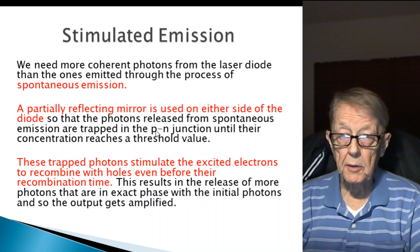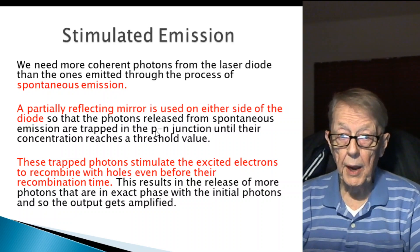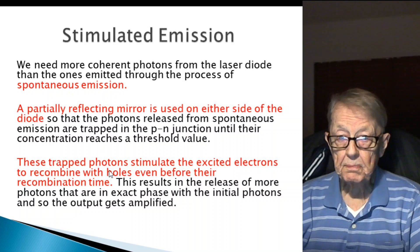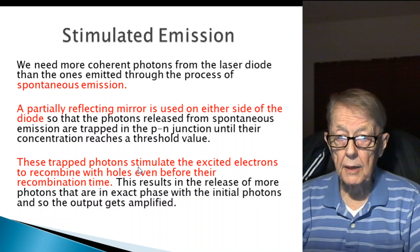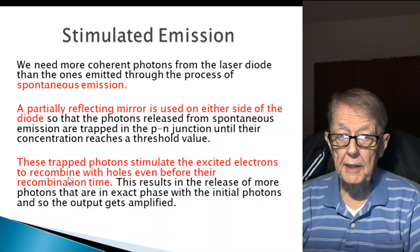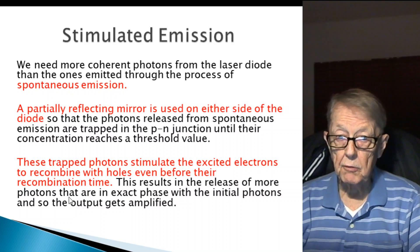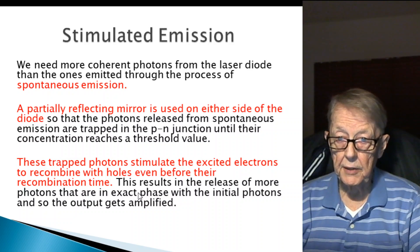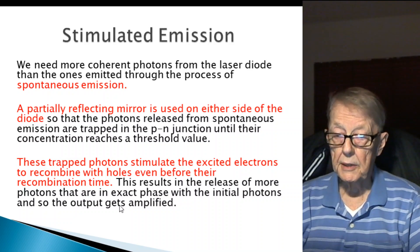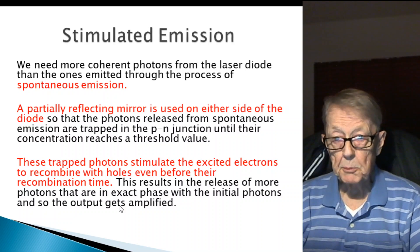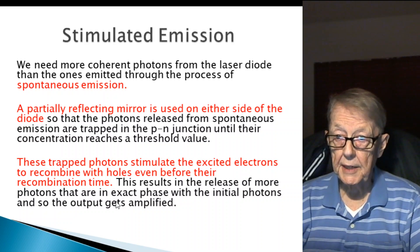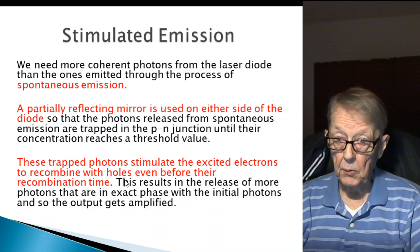Once it's emitted, somehow they're trapped until their concentration reaches a threshold value. These trapped photons stimulate the excited electrons to recombine with holes even before their recombination time. This results in the release of more photons that are in the exact phase with the initial photons, and so the output gets amplified.